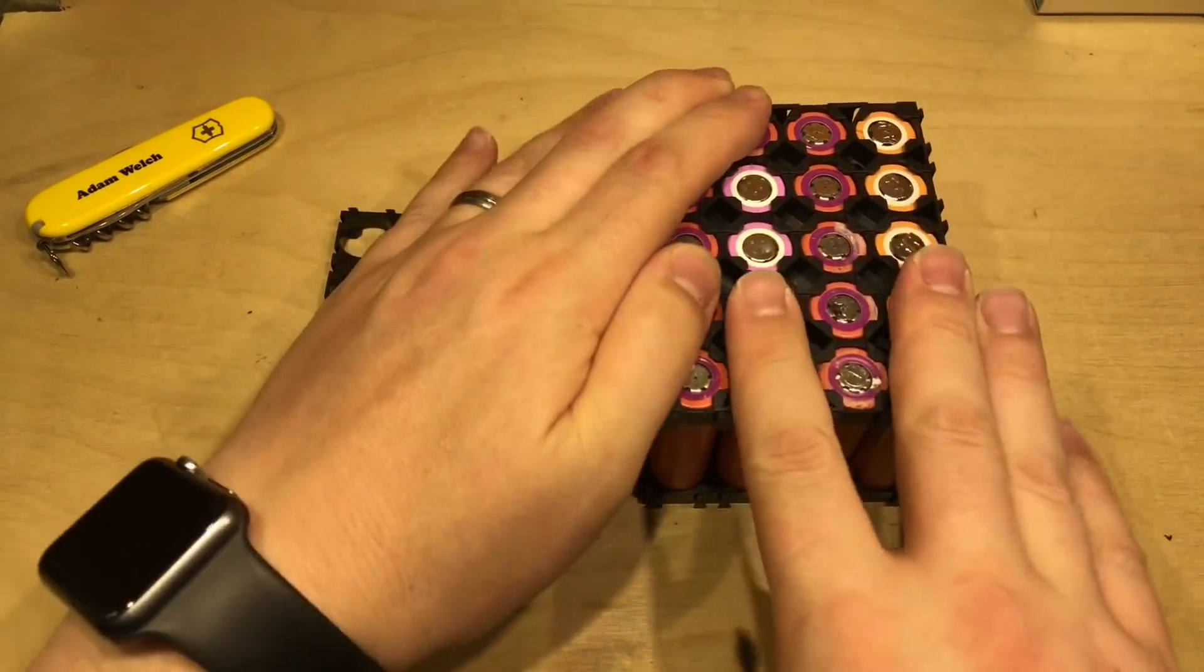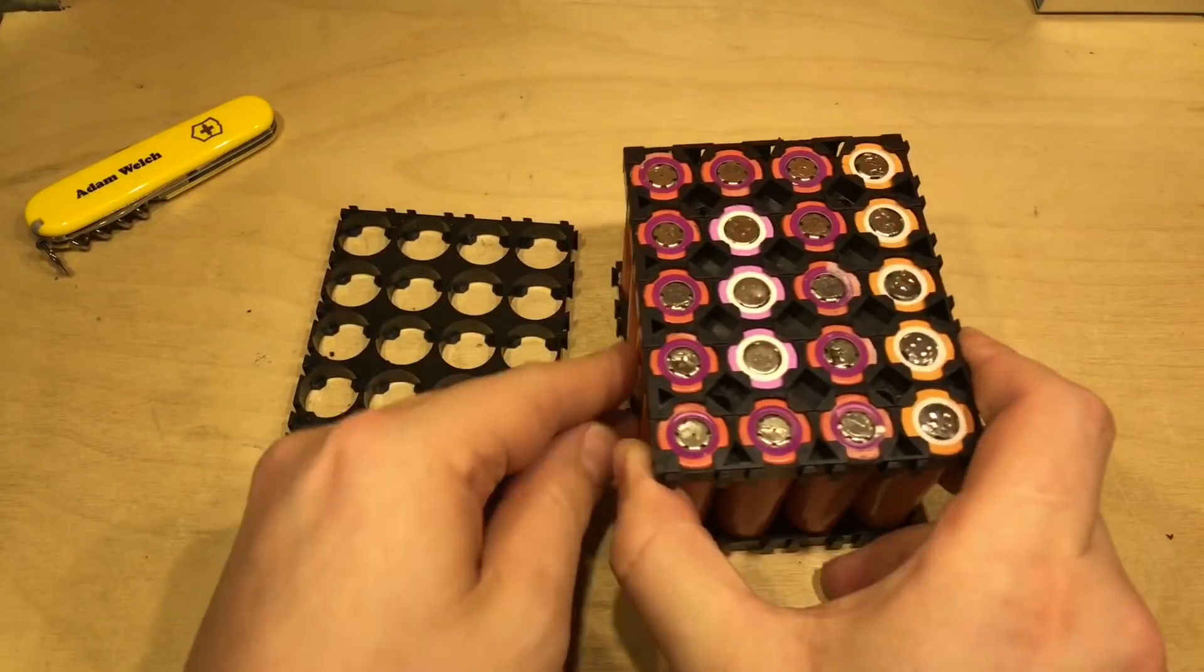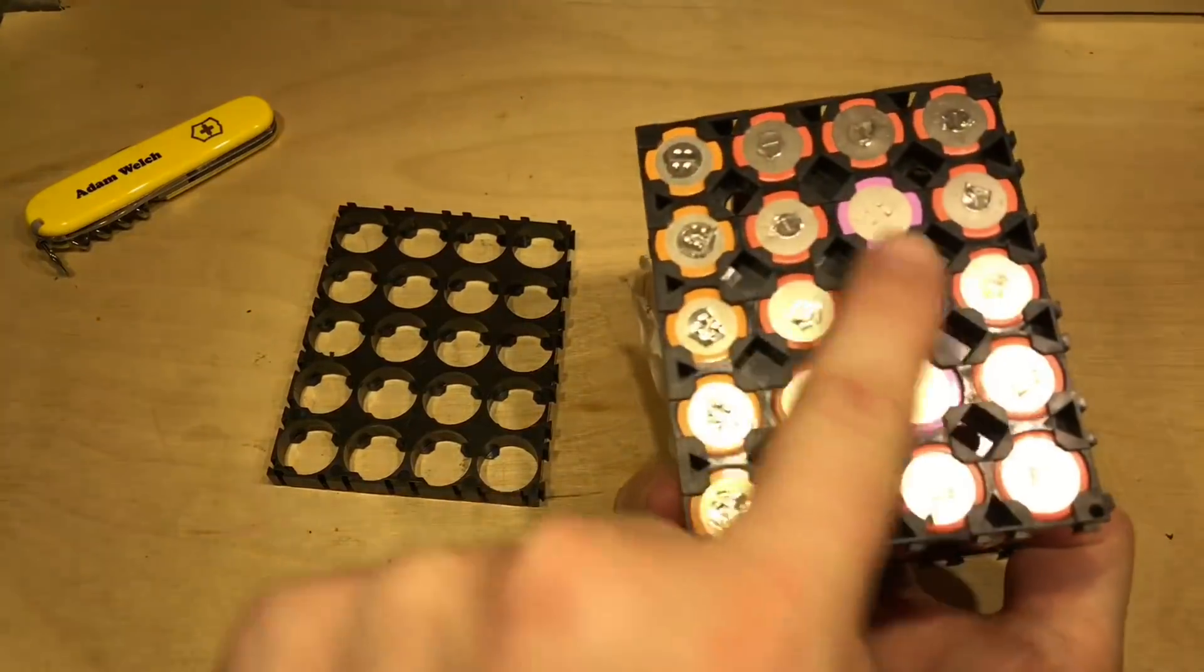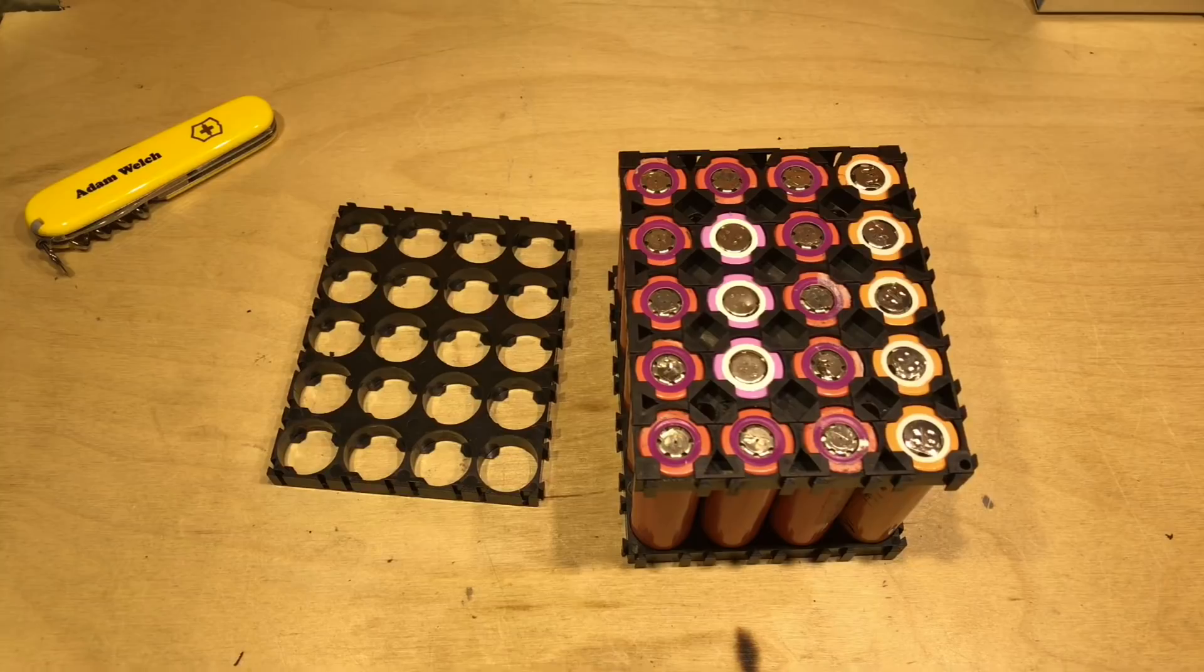Push that down and there we have it. We have a pack ready to wire up with all the positives on one side and all the negatives on the other because this is just going to be a nominal 3.7 volt pack.